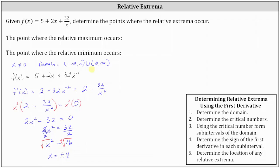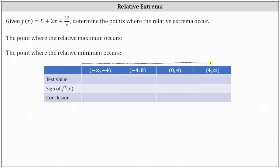We take the domain and divide it into subintervals using the critical numbers x equals negative 4 and x equals positive 4. On the number line, we place an open point at zero because it is not in the domain, and open points at x equals negative 4 and positive 4 because those are the critical numbers, giving us four subintervals.